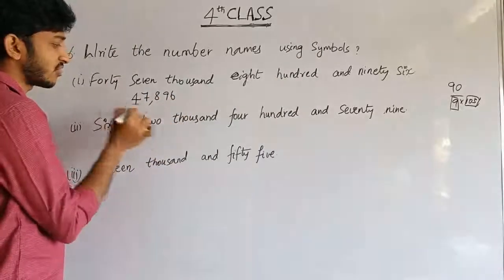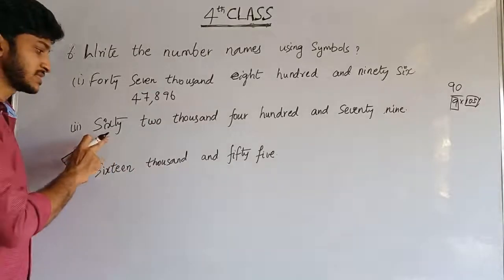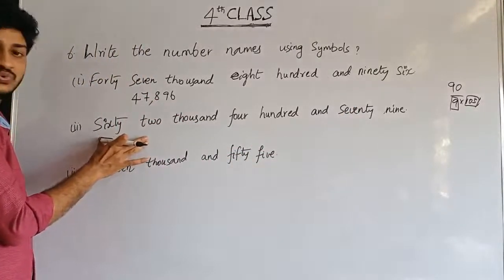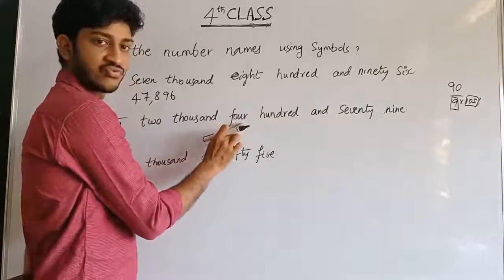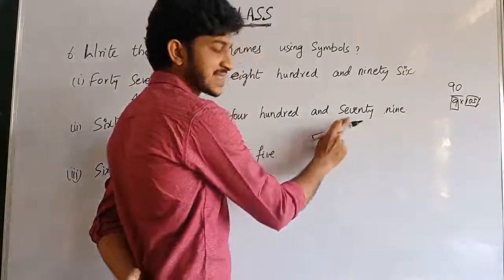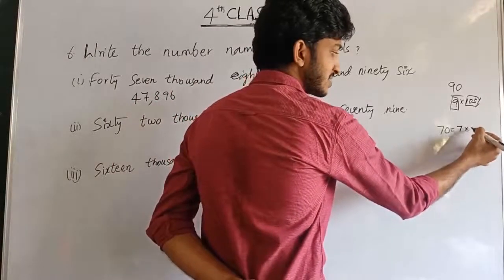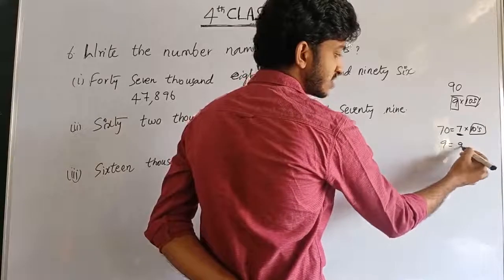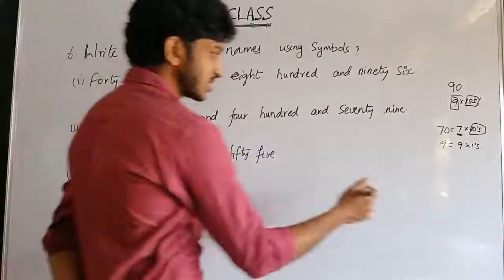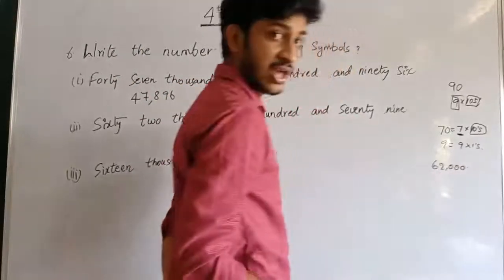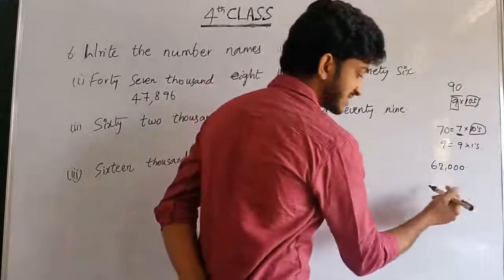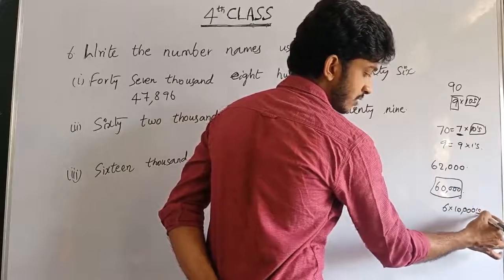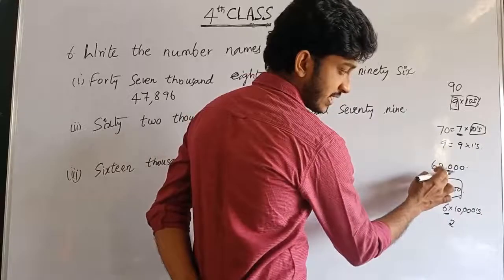See: sixty-two thousand, four hundred and seventy-nine. Total thousands given are sixty-two thousand. Four hundreds. Seventy means seven tens. Nine ones. So sixty-two thousand is written as 62,000.